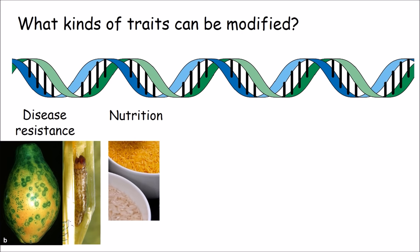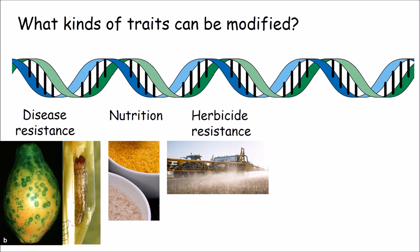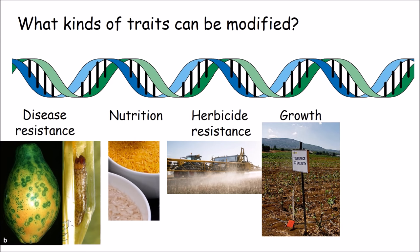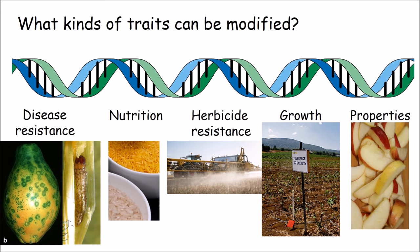Other modifications make the plant herbicide resistant, so a farmer can tend to a much larger acreage by spraying herbicides instead of plowing or manual weeding. There are also genetic modifications to facilitate farming under harsh conditions like drought or salinity. Finally, some genetic modifications modify the properties of the plant itself, such as increasing the size or decreasing the growing time of the plant, or changing qualities like browning when an apple is cut.